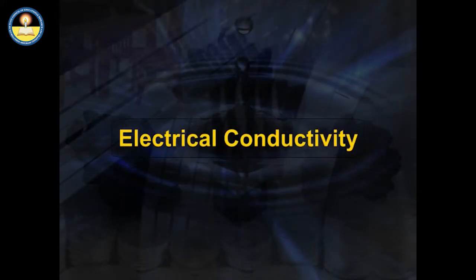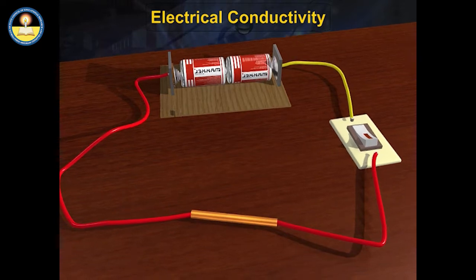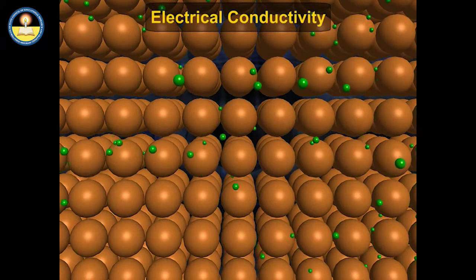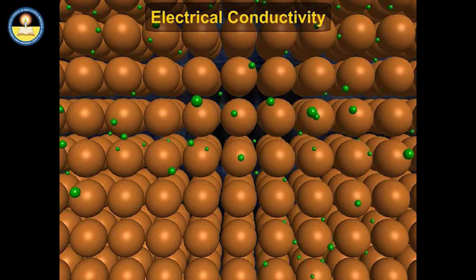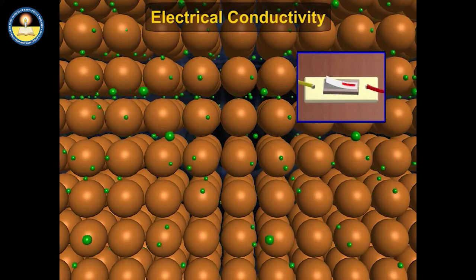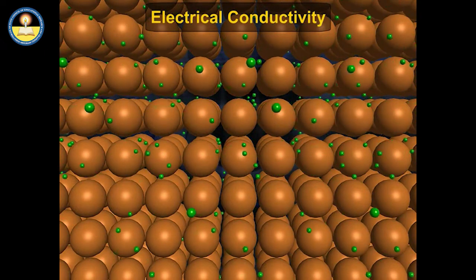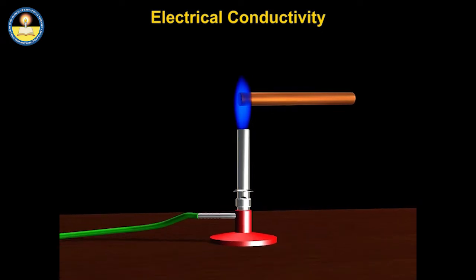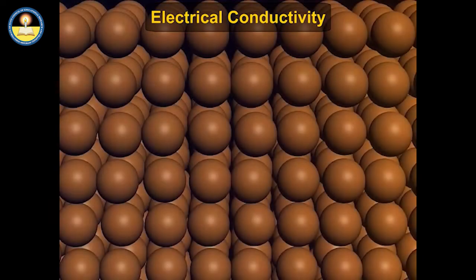Electrical Conductivity. The animation shows the electrical conductivity of metals. A copper wire is taken. The nucleus with completely filled shells of copper atoms is depicted as brown balls, and green colour depicts free electrons. These electrons are free to move. When the current is switched on, electrons move from the negative to positive terminal. As electric current flows across a metal, it becomes conducting. Metal atoms consist of free electrons of the valence shell and the remainder positively charged part called the kernel.